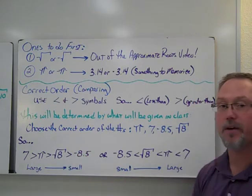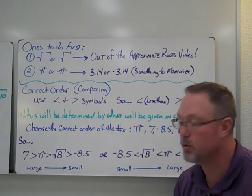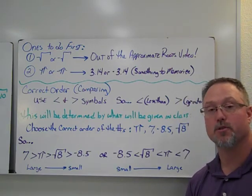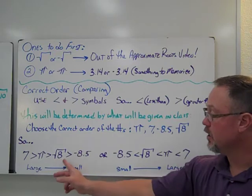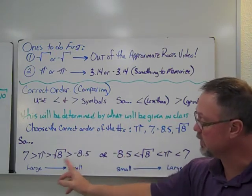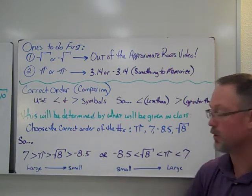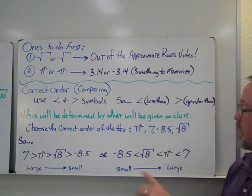So again, with the square root of 8, I want to think of two numbers. I would probably think maybe 2 and 3. 2 squared is 4. 3 squared is 9. So this is going to be almost 2.9. So you're looking at something that is bigger than, pi is bigger than that, but it's bigger than the negative 8.5.